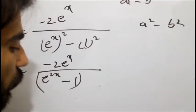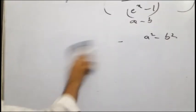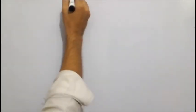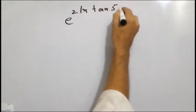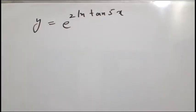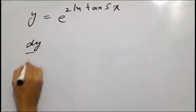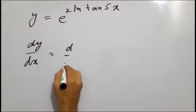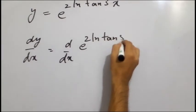बाकी remaining questions आपने खुद करने हैं, practice करनी है। अगर कोई difficulty है तो पूछ सकते हैं। मैं एक और इससे मतलक सवाल करता हूं जिसमें exponential function और log का इस्तेमाल इकट्ठा हो रहा है। सवाल है: y equal to e raised to power 2 natural log of tan 5x। इस पर differentiation apply करनी है with respect to x। dy over dx, d over dx into e raised to power 2 natural log of tan 5x।